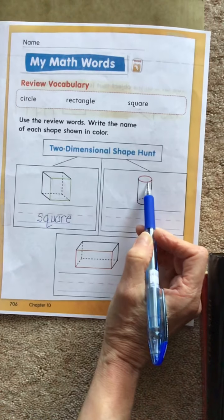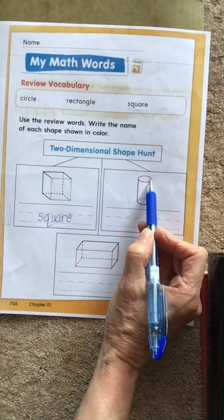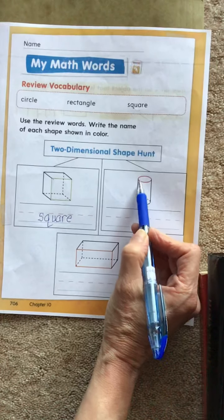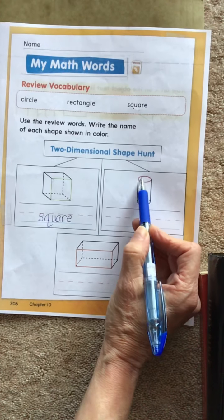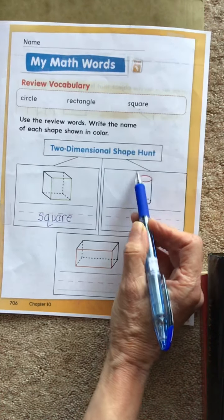Okay, now this one's in red. What is the face of this cylinder called? It's a circle.